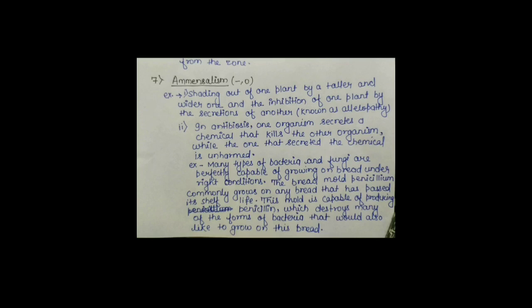तो ये जो सारे Examples हमने देखे — Population Interaction का। I hope आपको Population Interaction, जो कुछ भी हमने पढ़ा है — Population Interaction के Types with Examples — ये सब कुछ समझ में आ गया होगा। हमने Population Growth Models में दो तरह के Growth Curves देखे — Exponential (J-shaped) और Logistic (S-shaped/Sigmoid)। Population Interaction में हमने Mutualism, Proto-cooperation, Amensalism, Parasitism, Predation, Competition — इन सब Interactions को Examples के साथ discuss किया।